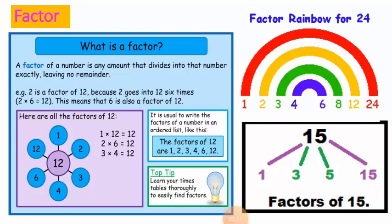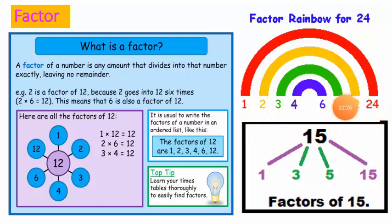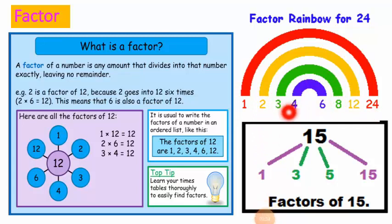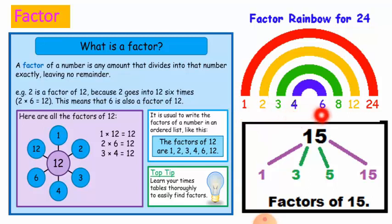Now let's take another number, twenty-four. When we multiply one with twenty-four we get twenty-four; two goes into twenty-four twelve times; three goes into twenty-four eight times; and four goes into twenty-four six times. So the factors of twenty-four are one, two, three, four, six, eight, twelve, and twenty-four.